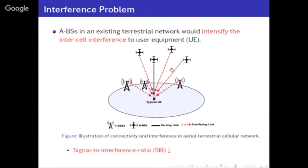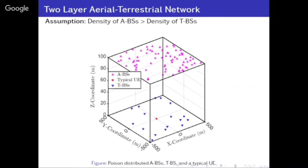In this case, the BS is either on the ground or on a fixed plane in the air. So we model something like a 3D model but with just two layers. On the ground layer, you have all the terrestrial BSs, and on the upper layer, you have all the aerial BSs. The user is somewhere in between, and we assume the aerial BS density is higher than the terrestrial BS density.